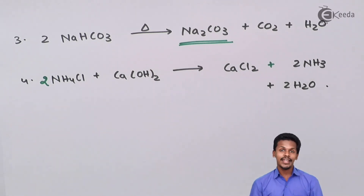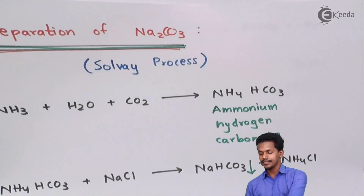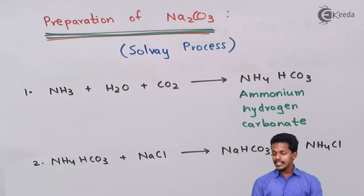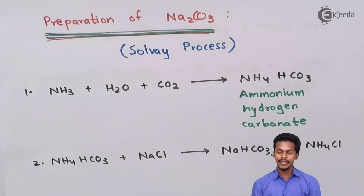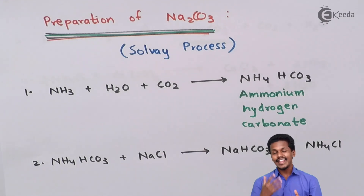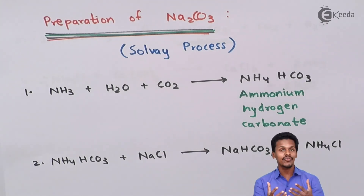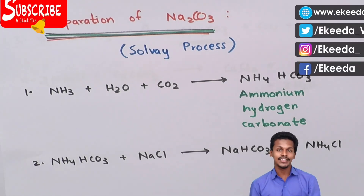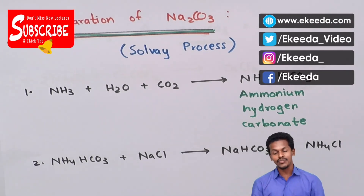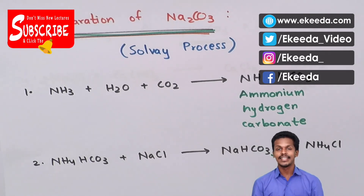We cannot prepare potassium carbonate by the Solvay process. The reason is that if we look at step two, sodium bicarbonate settles down as a precipitate; however, potassium bicarbonate is very soluble in water, so we cannot separate it or filter it out. Therefore, even though it undergoes thermal decomposition, we cannot obtain potassium carbonate from the Solvay process.